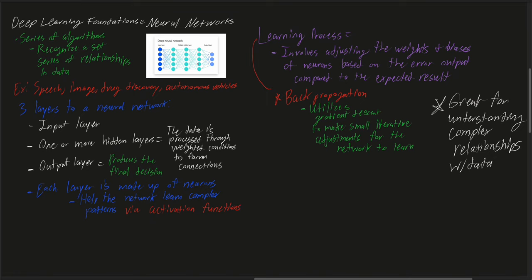A neural network is comprised of three different layers: we have the input layer where the data goes in, we have one or more hidden layers which is where the data is being processed through a series of weighted conditions to form connections, and we have our output layer which produces the final decision. Each layer is made up of neurons which help the network learn complex patterns via activation functions.